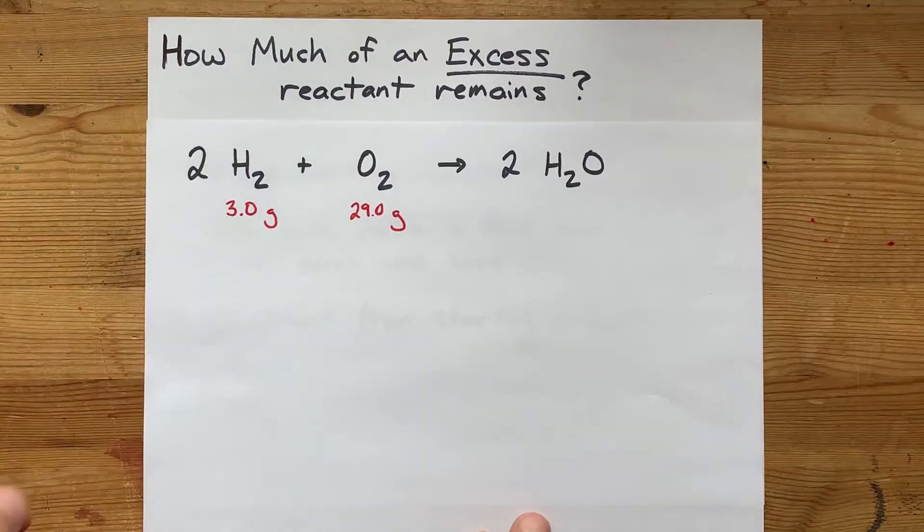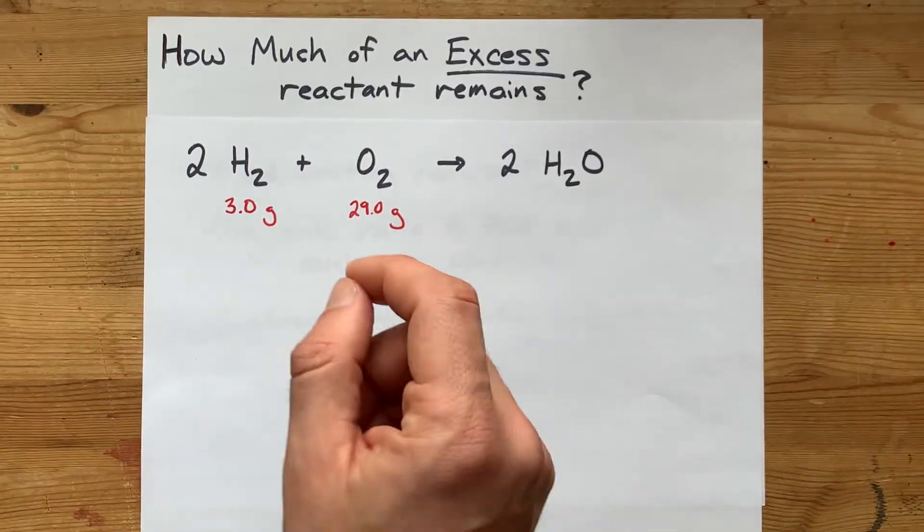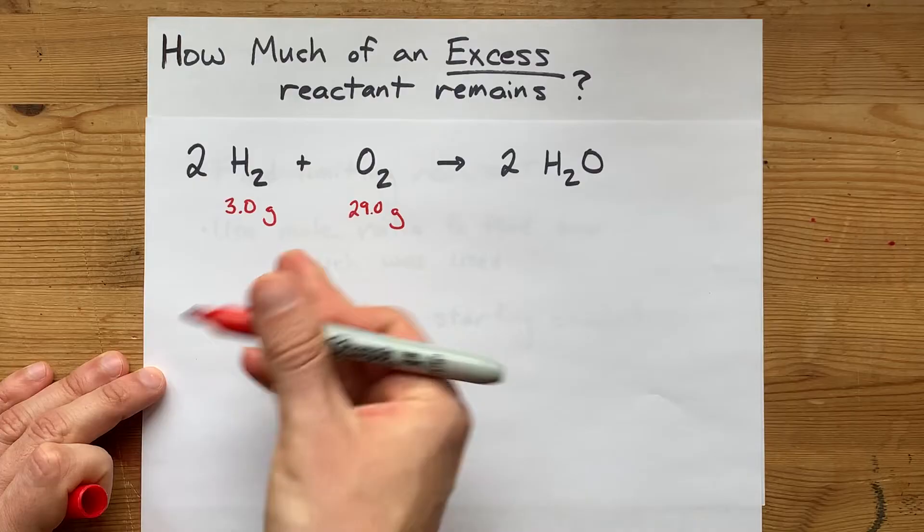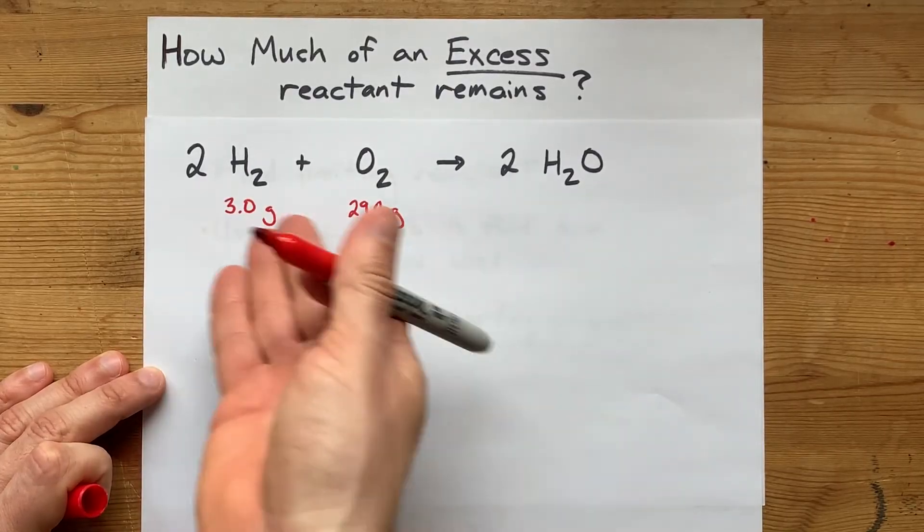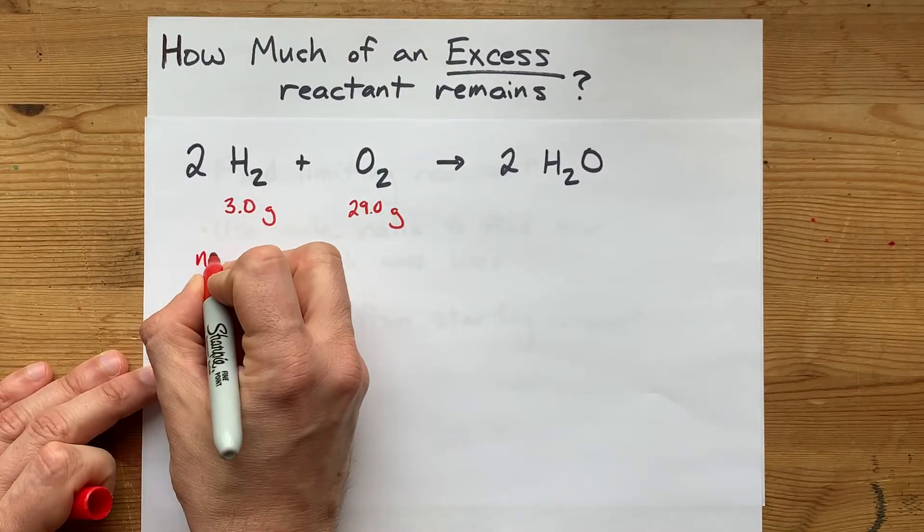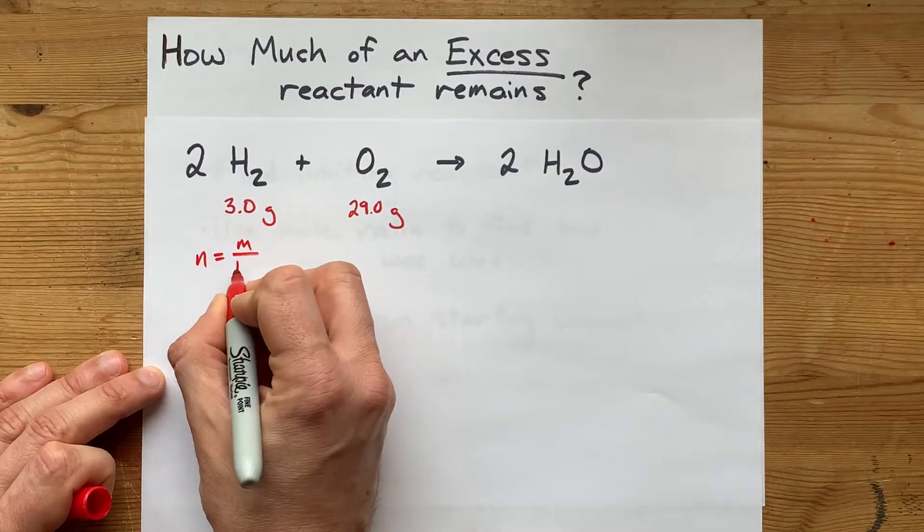Let's do it together. Step one, find the limiting reactant. The way you find the limiting reactant is, first you need the numbers of moles of each of these things. The number of moles is the mass divided by the molar mass.